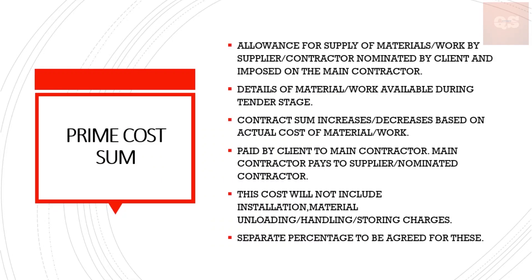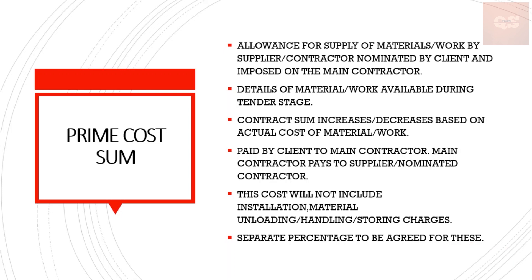Prime cost sum. The prime cost sum is an allowance for the supply of materials or work by a supplier or a contractor that is nominated by a client, and it is mainly imposed on the main contractor. These details of this work will be available during the tender stage. The contract sum may decrease or increase based upon the actual work that is happening. The payment is done by the client to the main contractor, who will then need to pay that particular nominated subcontractor.